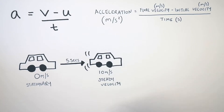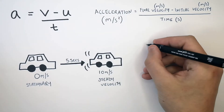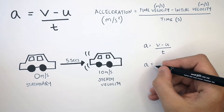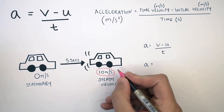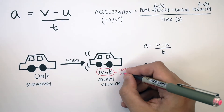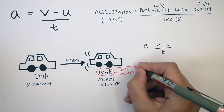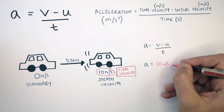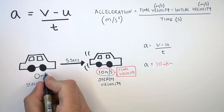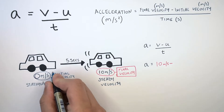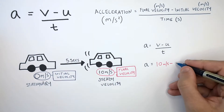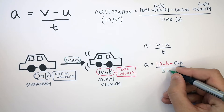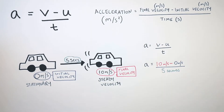Let's now use this information to calculate the car's acceleration. We use the equation a equals v minus u over t. We're looking for a, so we do not need to rearrange the equation. We firstly identify v — v is 10 meters per second because it is the final velocity. Then we identify u, the initial velocity, which is 0 meters per second. And we identify the time it took the car to accelerate, which is 5 seconds.